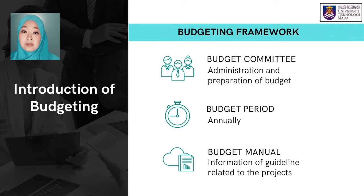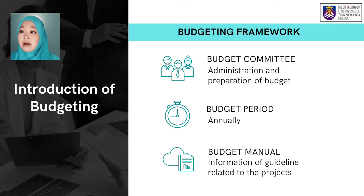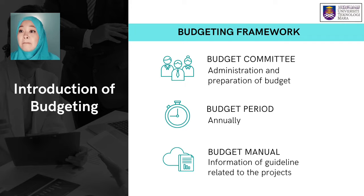Let's take a look at a budgeting framework. There are three elements in the budgeting framework: the budget committee, administration and preparation of budget, and the budget period which is usually annually. There is also a budget manual, which consists of information and guidelines related to the projects.